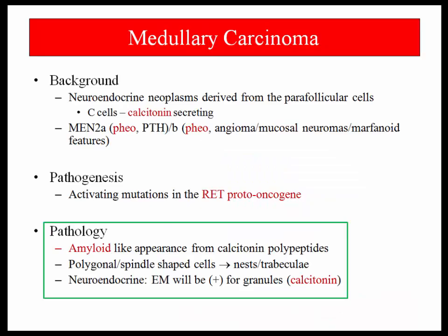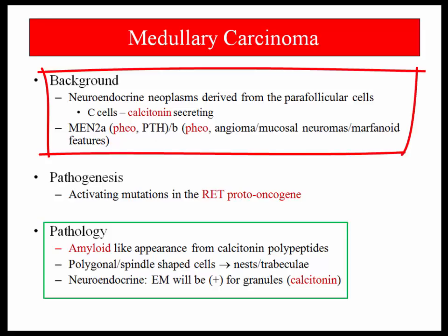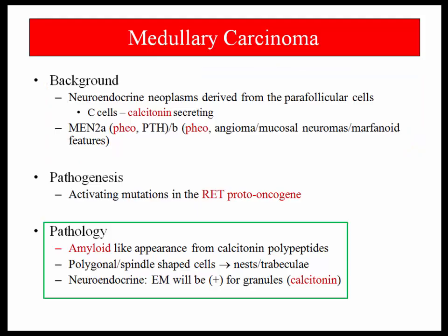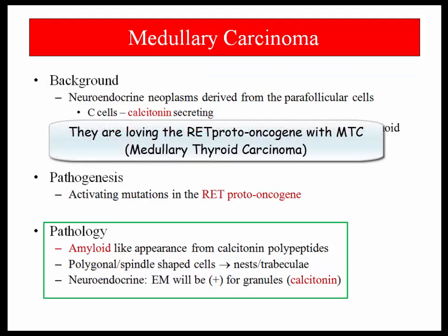Medullary thyroid carcinoma is a neuroendocrine neoplasm derived from parafollicular C-cells. The C-cells are calcitonin-producing. Medullary thyroid carcinoma is almost always discussed in the context of MEN syndromes. They'll give a pathologic description and ask what other symptoms the patient may have — the answer will be some derivative of pheochromocytoma, such as headache or hypertension. Please note the activating mutation of the RET proto-oncogene, associated with loss of cell cycle regulation. This information is often included in the question stem.